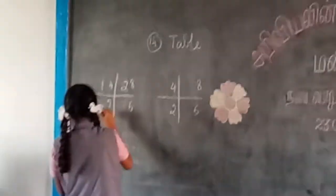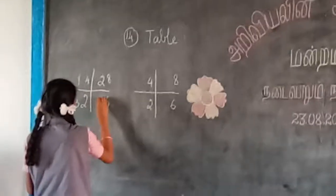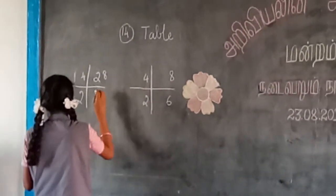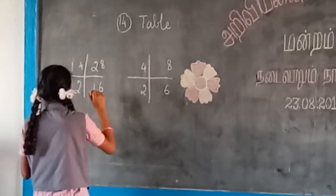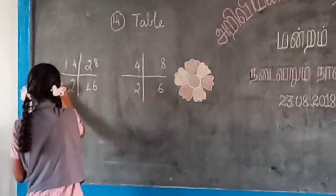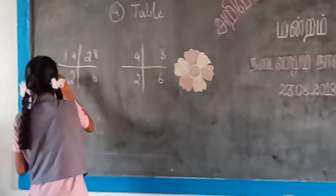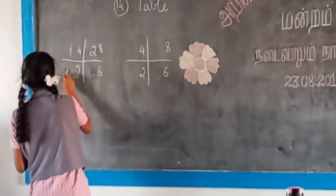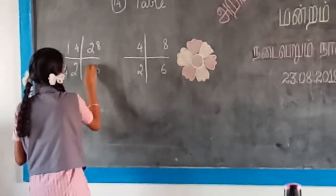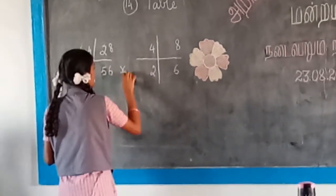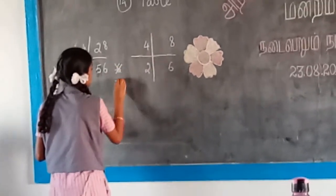One, two, three. Three kareas is four. Two, three kareas is four. Four. Five, six, kareas is seven.